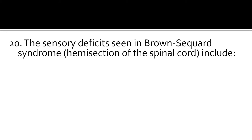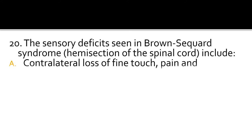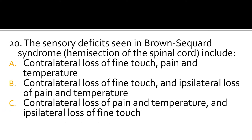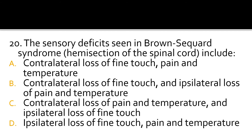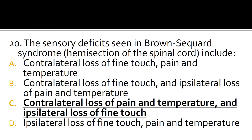Question 20. The sensory deficits seen in Brown-Séquard syndrome, which refers to hemisection of the spinal cord, include which of the following? The correct answer is C: there is contralateral loss of pain and temperature, and ipsilateral loss of fine touch.